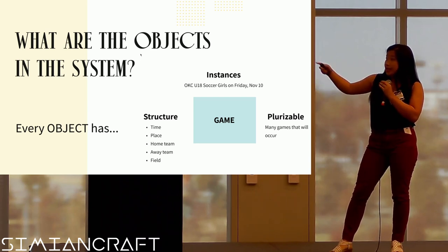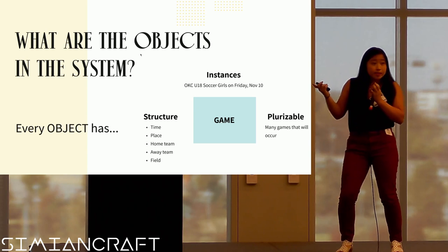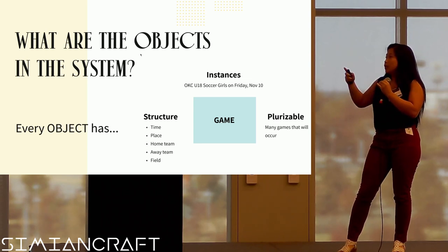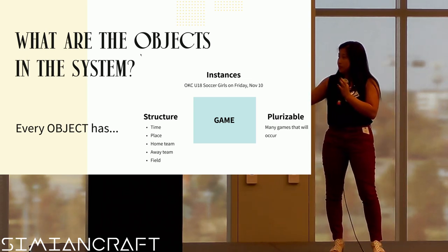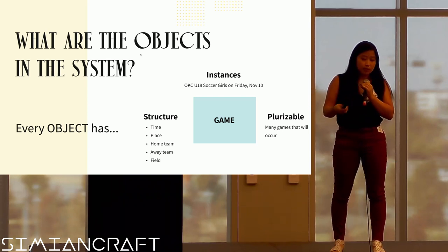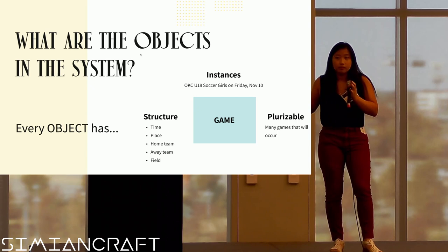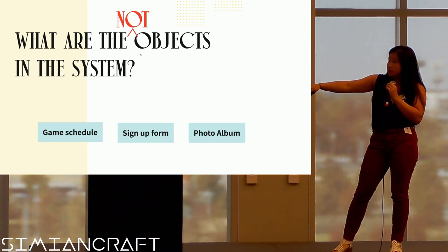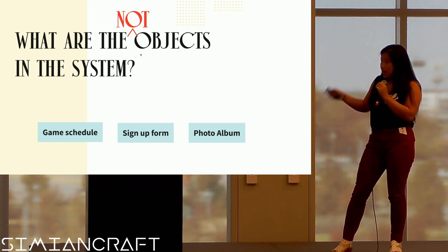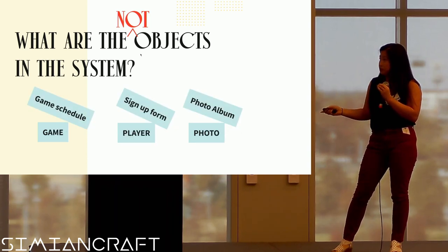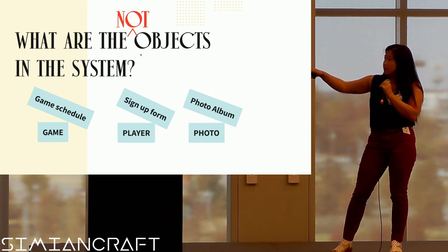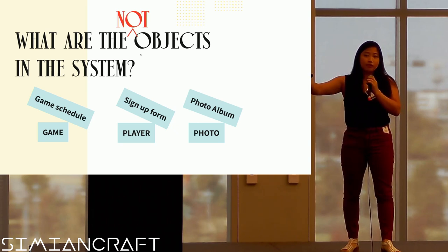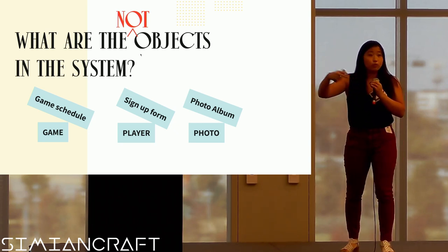For example, a game: the structure is what time is it, the place, is it a home team — and an instance could be the OKC U18 girls soccer team game happening November 10th. There are many games that will be happening. What are not objects? A game schedule, a sign-up form, and a photo album are not objects — those are collections of objects. A game schedule is a collection of games; a sign-up form is for a player; a photo album is a collection of photos. We want to get to the lowest level of what that base is.